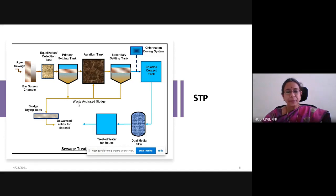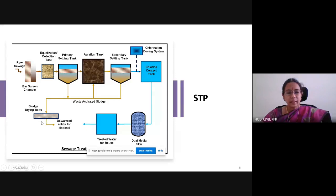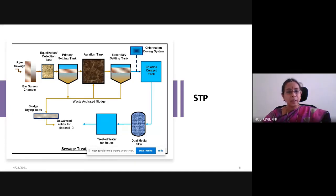After filtration, the wastewater is taken out for reuse — that is, the treated effluent is taken out for reuse. Waste activated sludge is taken out and sent to the sludge drying beds. Here, dewatering is done since the sludge will contain liquid. After dewatering, the dry sludge is let out for disposal — either to sludge drying beds, to a landfill, or sometimes used as manure if it does not contain any harmful content.